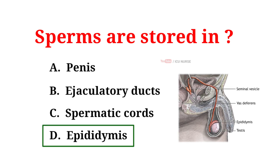Sperms are stored in a part of the male reproductive system called the epididymis. The epididymis is a coiled tube located behind each testicle. Its main job is to store and mature sperm until they are ready for ejaculation. During puberty, sperm production begins in the testicles, then they travel to the epididymis to mature and gain the ability to swim and fertilize an egg.